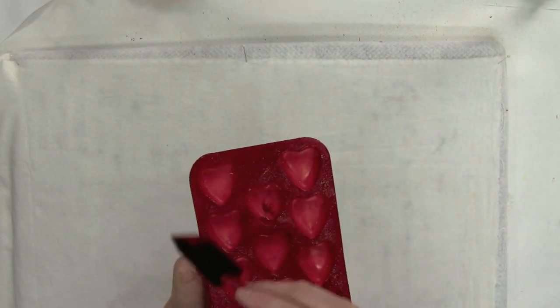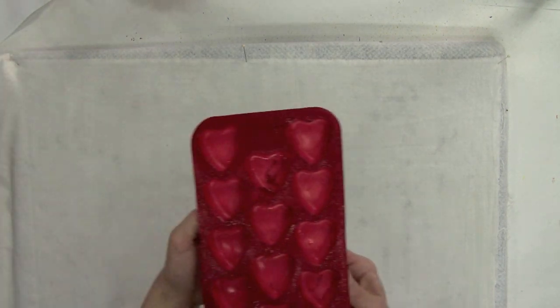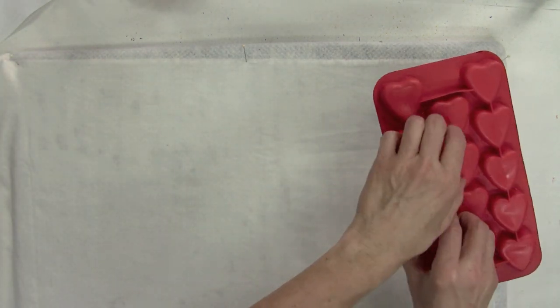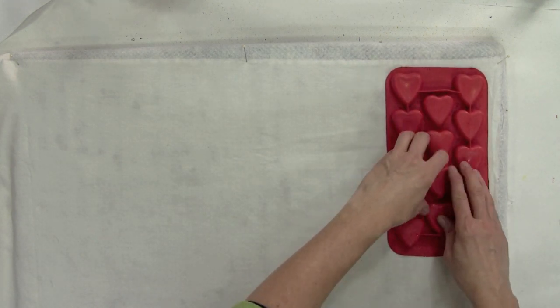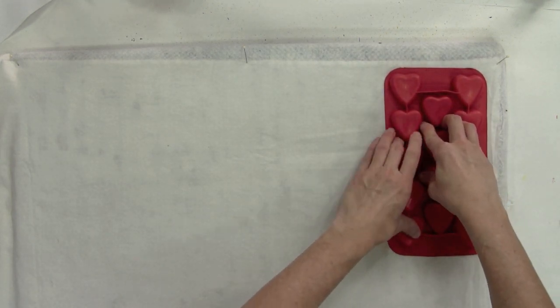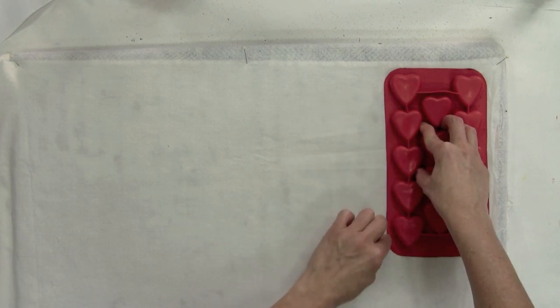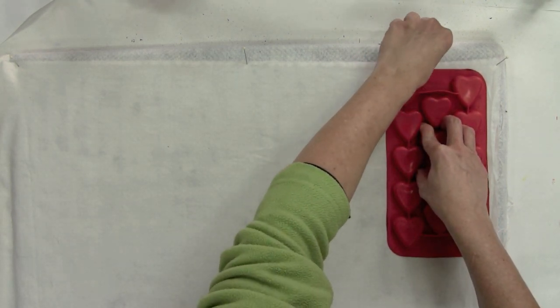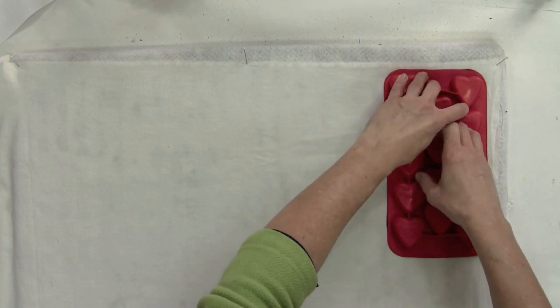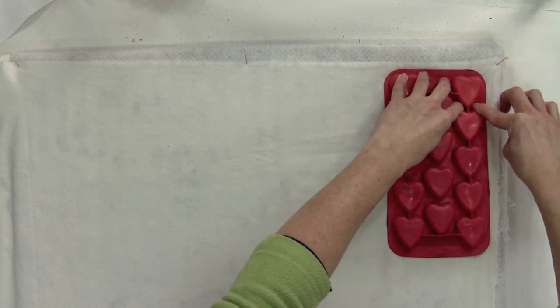I'm making sure I have all of the surfaces covered here, and now I'm going to carefully flip it over and print. The area that's printing is outside of the hearts, and so that's what I'm pushing on to make sure that it touches the fabric and prints.